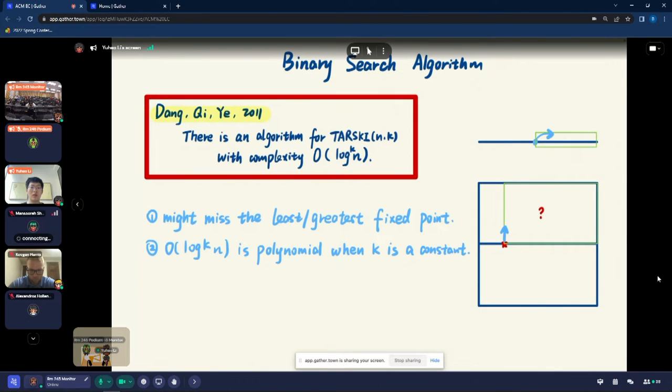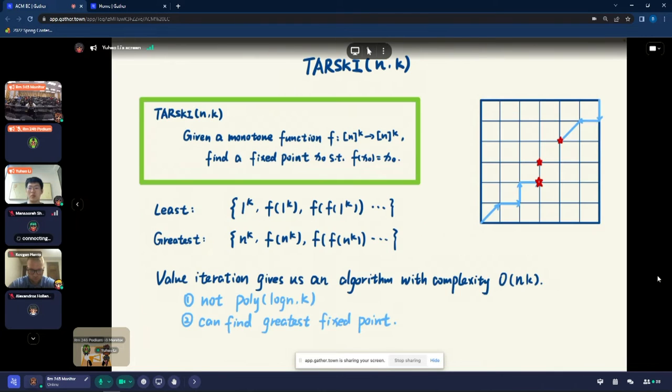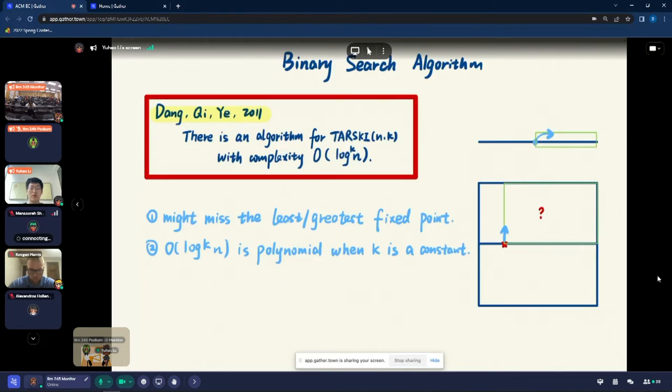In 2011, Dongqi and Ye give us a binary search algorithm with complexity log n to the k. Note that in general, log n to the k is not comparable to n times k. But for k is small or k is a constant, then this algorithm is a truly polynomial time algorithm. But it might miss the least and greatest fixed points. It can only guarantee to find a fixed point.